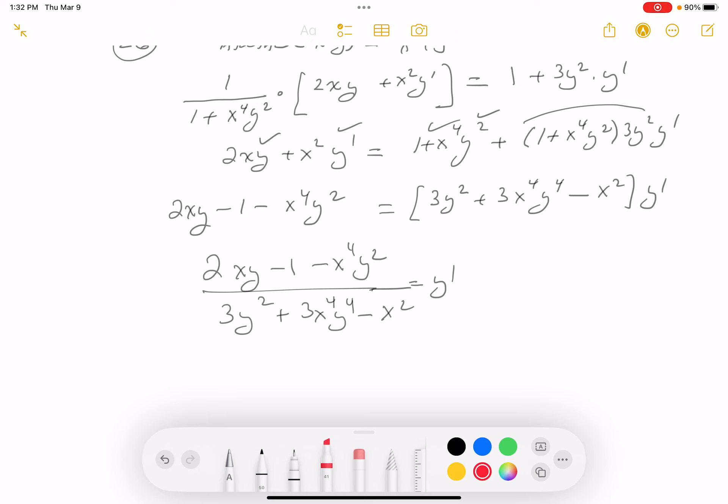Let's take a look. And what do I see? Well, in letter B, I think I'm seeing it. I think I'm seeing 2xy minus 1 minus x to the 4 y squared. Do I see the bottom in B? Let's see, 3y squared.